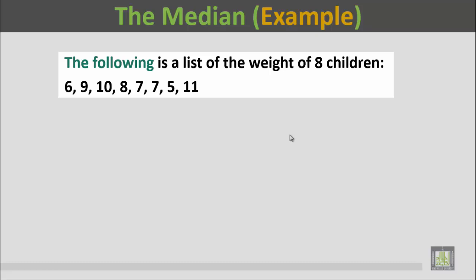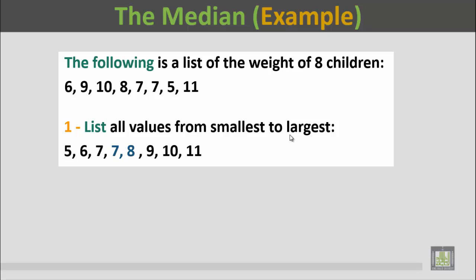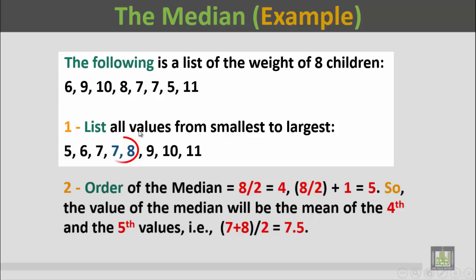First step is to list all the values from the smallest to the largest. The smallest is 5 and the largest is 11. We are going to list all values from smallest to largest: 5, 6, 7, 7, 8, 9, 10, 11. Order of the median is n by 2. N is equal to 8. 8 by 2 is 4.